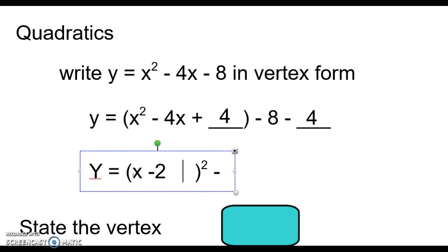And inside those parentheses, we are going to put x - 2. We can put that together here. And then after the parentheses, we combine that -8 and that -4 to get -12. That's vertex form.